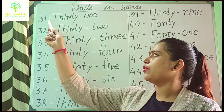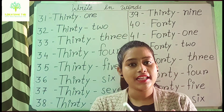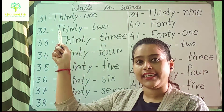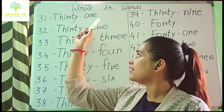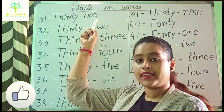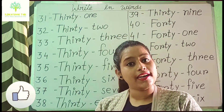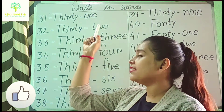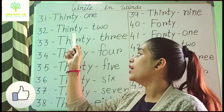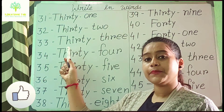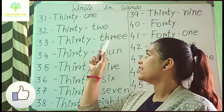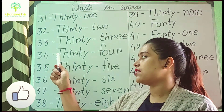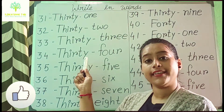Now start from 31. First write the 30 spelling, then write the 1 spelling. 30 is T-H-I-R-T-Y, then give a hyphen, then 1 is O-N-E. For 32, first write 30 spelling T-H-I-R-T-Y, give a hyphen, then 2 is T-W-O. For 33, T-H-I-R-T-Y then 3 is T-H-R-E-E — note it has two E's.